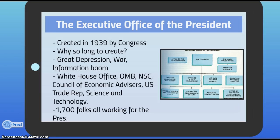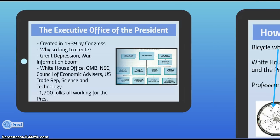Key offices and positions in the executive branch include the chief of staff, the National Security Council, the White House Office, the Office of Management and Budget, the Council of Economic Advisors, the Office of U.S. Trade Representative, and the Office of Science and Technology — and those are only the major ones. These roughly 1,700 professionals help the president work with Congress, meet with interest groups, deal with the media, and interact with the public.